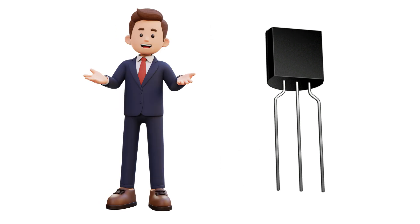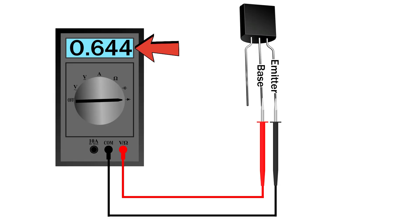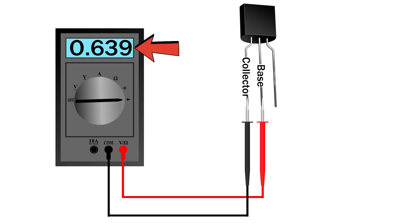If you don't have a datasheet here's a trick. Emitter to base junction shows slightly higher voltage drop than collector to base junction. So measure both. The one with slightly higher reading is emitter.